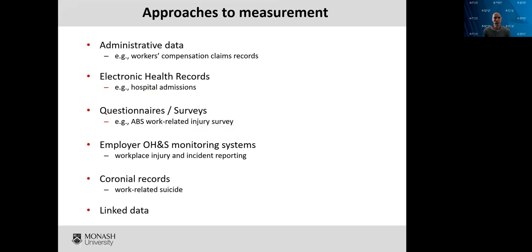I want to touch on how we measure work disability and work injury. There are many different sources of data we can use. One that we use a lot is administrative data — things like workers compensation claim records. When a worker gets injured in Australia they may be eligible to make a claim for workers compensation, and we have a big network of insurance systems set up to support people. Those insurers keep detailed records of each of those injuries and conditions, and we use that a lot in research. Much of the data we have at a national level on the prevalence and consequences of work injury comes from these administrative data sources.